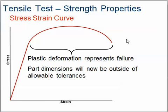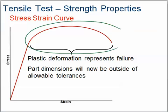This upper region represents failure. When we have this happening, it's no longer going to be acceptable tolerances because the part can no longer be used. So if a part exhibits this much strain and stress, it needs to be replaced — it's too big, too long, too skinny, not strong enough — all these different things.